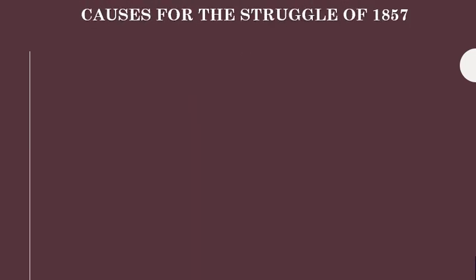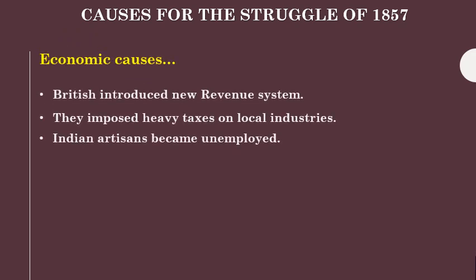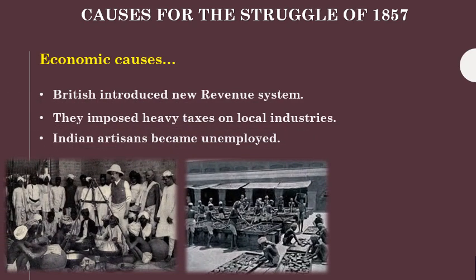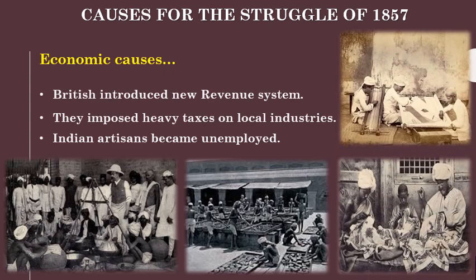Let us now study about the causes of the struggle of 1857. We are going to study economic causes, social causes, and political causes. First, the economic causes: the British introduced a new revenue system to increase their income, and taxes were forcibly extracted from farmers. Their policy was to sell British goods in India for profit, and they imposed heavy taxes on local industries. The handicraft and textile industries of India were ruined, and many Indian artisans became unemployed.